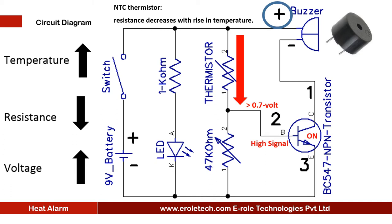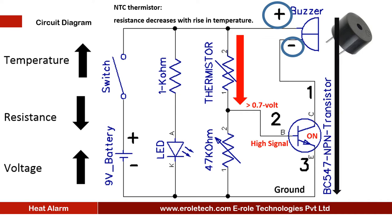This is the symbol of a buzzer. Its positive end is connected with the positive supply and the negative end is connected with the transistor. When the transistor turns on, it will connect the negative terminal of the buzzer with the ground, and the buzzer will start beeping.